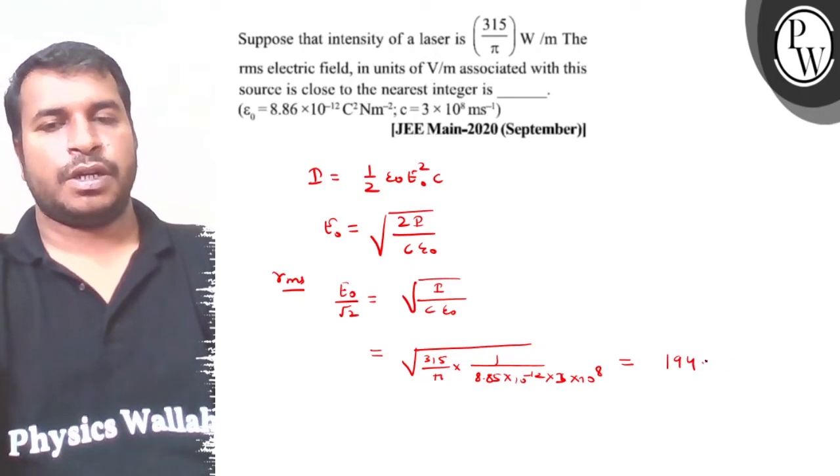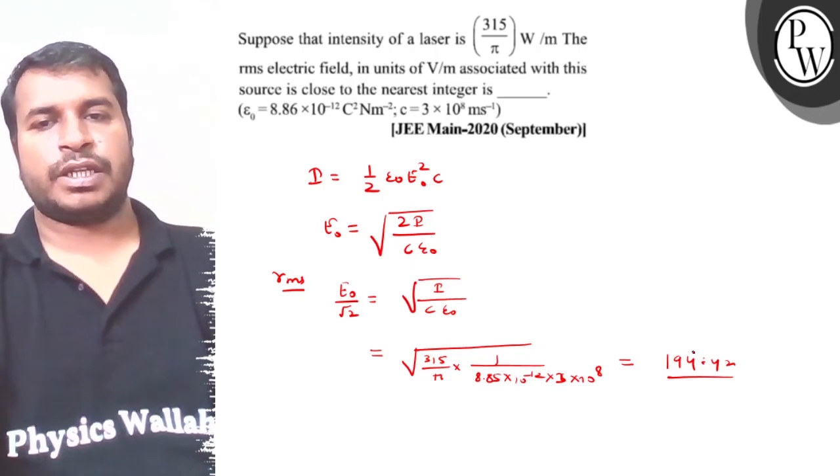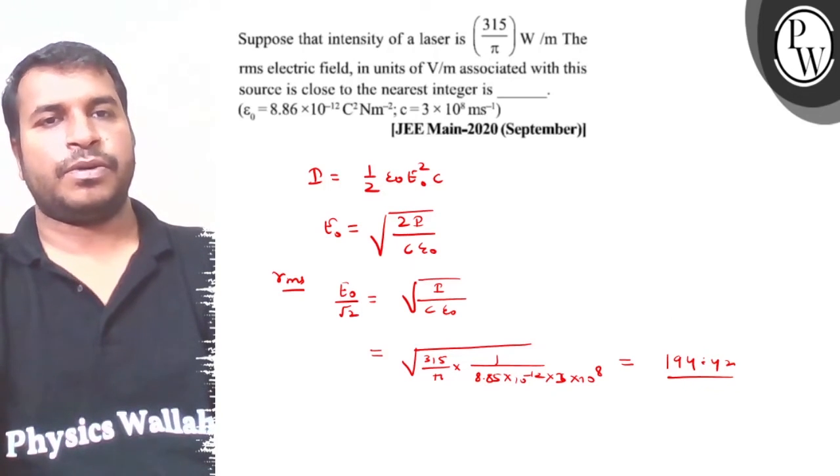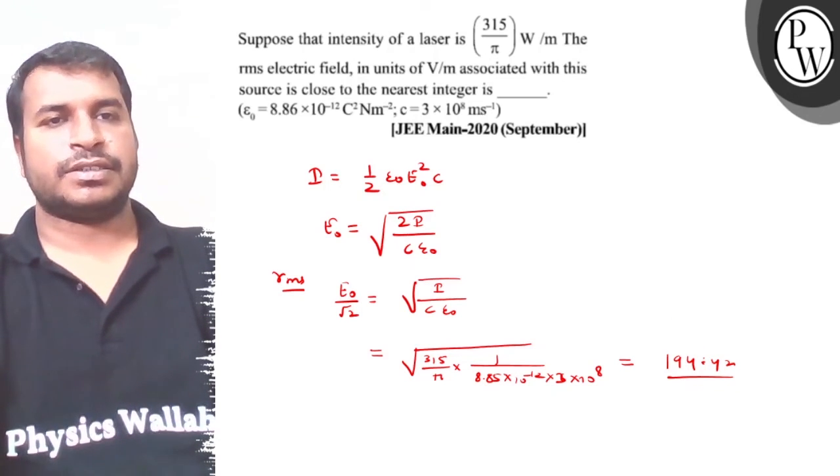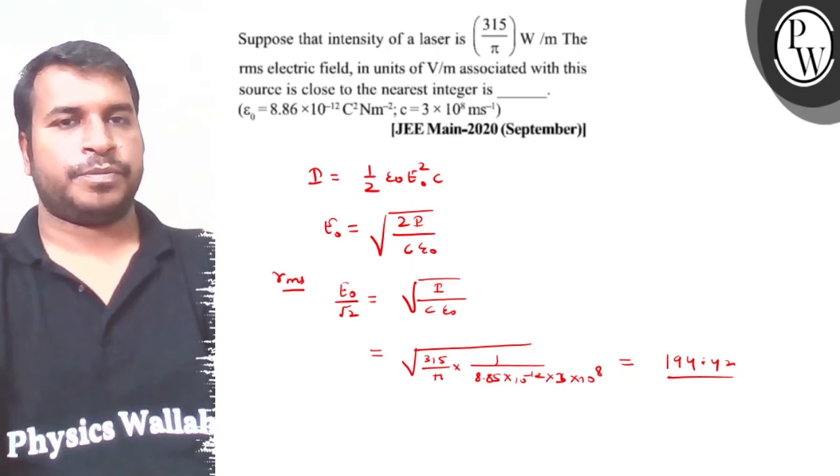then it is 194.4. So the answer will be, if we look at the approximation, that is 195, sorry 194. The nearest integer is 194, or if you put a point, then that is 194.4.